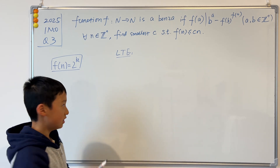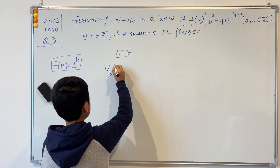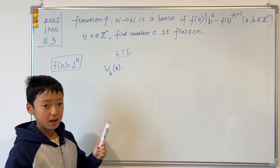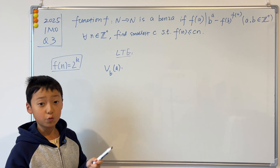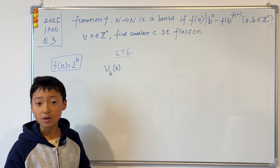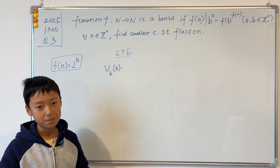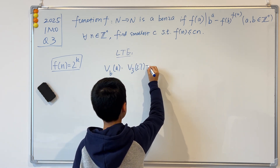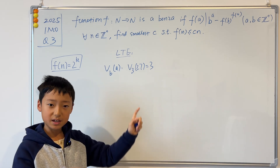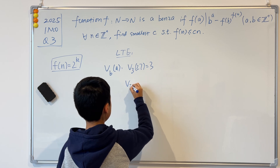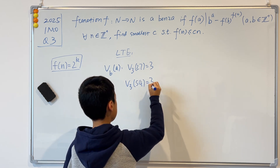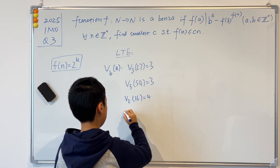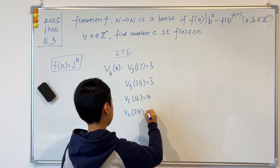LTE defines a function v_b(a), which is the maximum exponent for which b divides a. For example, v_3(27) = 3, since 3^3 = 27. Similarly, v_3(54) = 3. Also, v_2(16) = 4 and v_2(24) = 3.